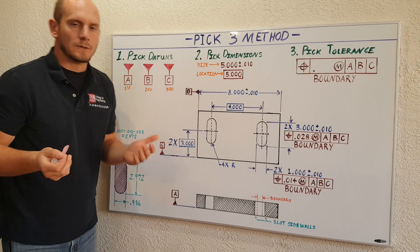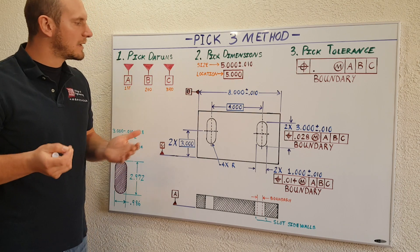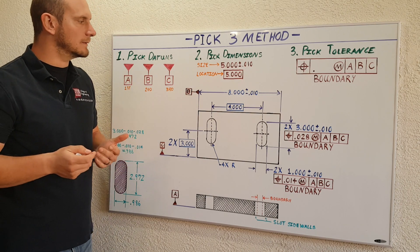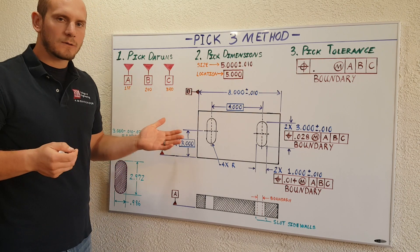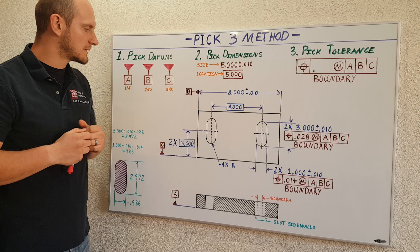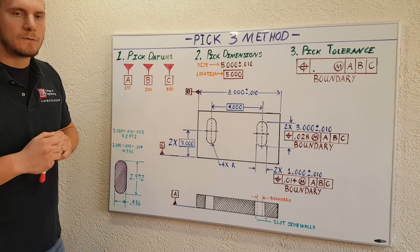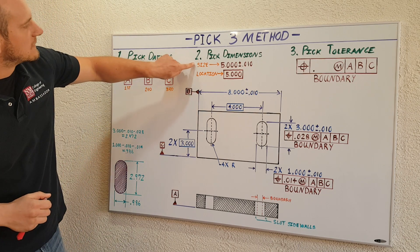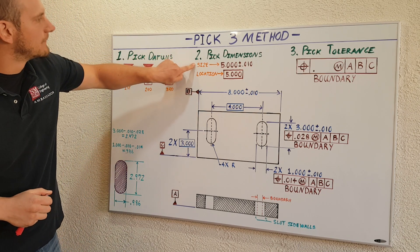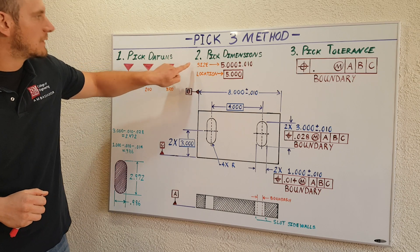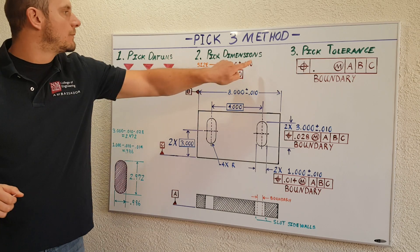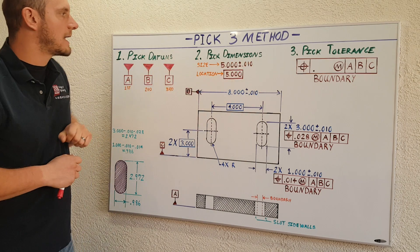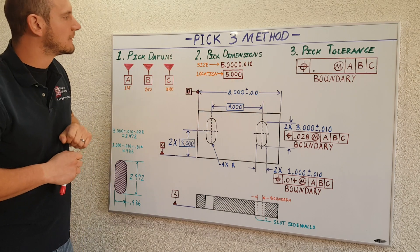Number two: you're going to want to pick your dimensions. In this particular example for our slotted features, we actually have two different types of dimensions. We have size dimensions, which are the traditional plus or minus type of dimensioning.